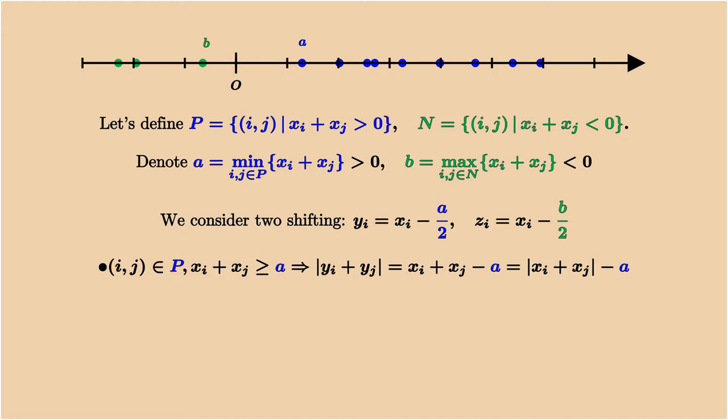For the sequence y, when i and j is a positive pair, xi plus xj is larger than a. This means the absolute value of yi plus yj is xi plus xj minus a.